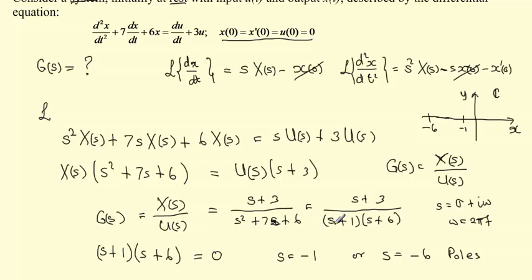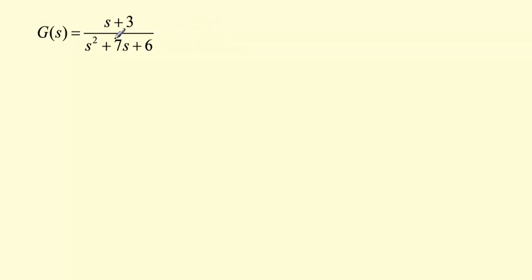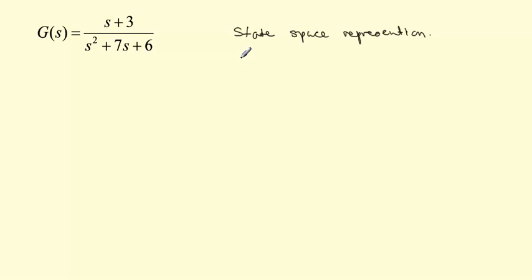So now we have the transfer function. We need to see how we go from the transfer function to the state-space representation. Step by step: since our system is a second-order system — because of the power of s — we need to declare a state-space vector. We call it x, and it will have two components, x₁ and x₂, so the state vector lives in ℝ².